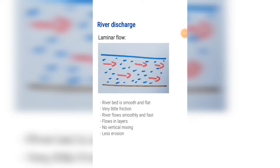River discharge. Laminar flow: the river bed is smooth and flat, there is very little friction. The river flows smoothly and fast, and it flows in horizontal layers. There is no vertical mixing and there is very little erosion inside this river.